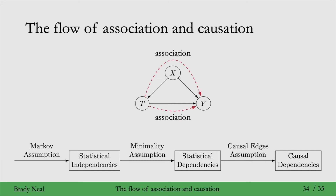When we add in the causal edges assumption, we can also talk about the flow of causation. Causation, also known as causal association, flows along directed paths. The edge from t to y is how causation is flowing from t to y in this graph. And this is not symmetric at all — causation only flows from t to y, not from y to t. This is because t is a cause of y, but y isn't a cause of t by the causal edges assumption.